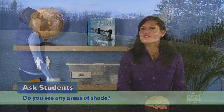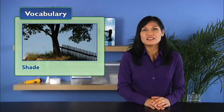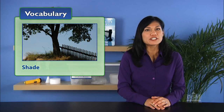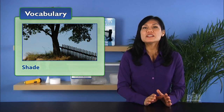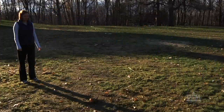Ask students, 'Do you see any areas of shade?' To assist them, point out that shade, like a large shadow, is an area partly darkened because something is blocking off light from it. Students may point out shaded areas that are the shadows of trees or buildings.